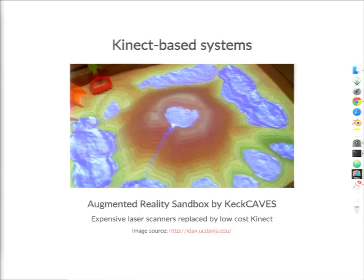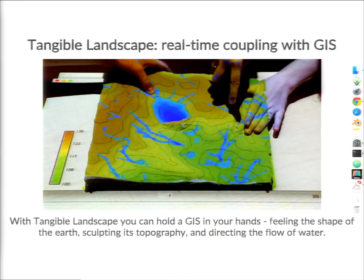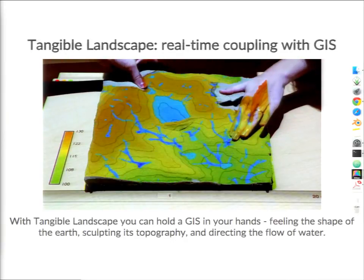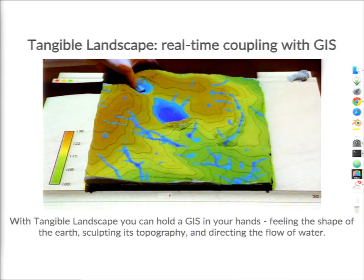The breakthrough came with the new generation of 3D scanners such as Microsoft Kinect. Several systems were developed using Kinect — most of you probably know the Augmented Reality Sandbox developed by Keck Caves at UC Davis, which you may have seen at conferences or museums, generating a lot of interest and excitement among children as well as adults. We were able to take advantage of the fast and quite accurate scanning of Kinect and developed the first system with real-time coupling of a 3D physical model and GIS.